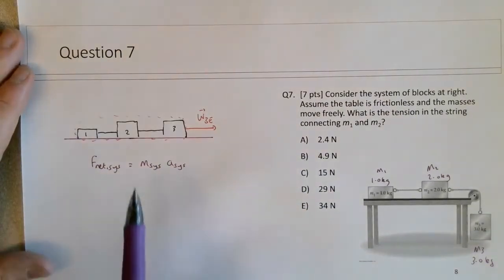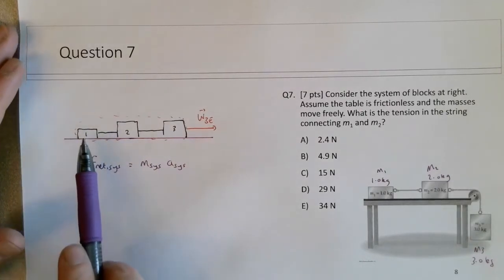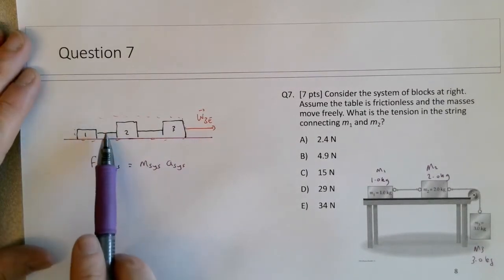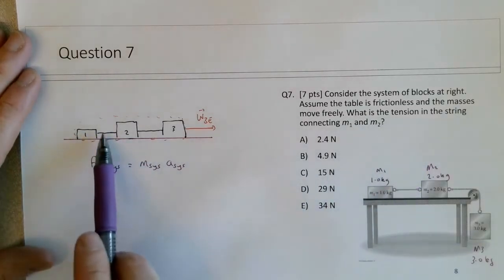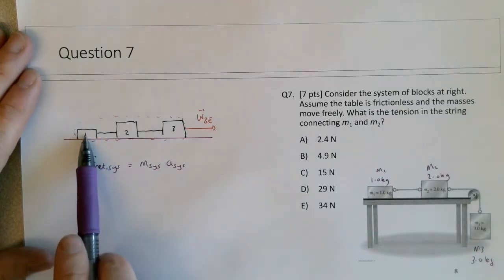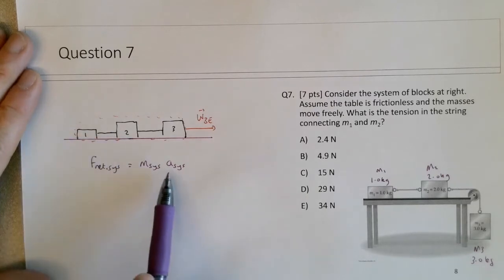So we know from Newton's second law that the F net on the system is equal to the mass of the system times A of the system. To figure out the tension on block 1, the tension force in the string between M1 and M2, it's also the tension force on block 1, and that happens to be the net force on block 1. So I need to figure out the acceleration of block 1 in order to figure out the tension here.